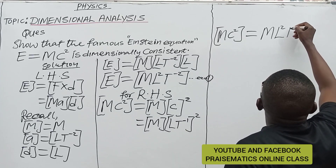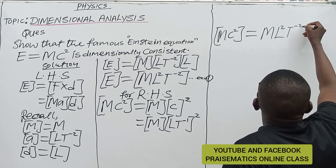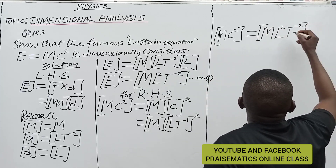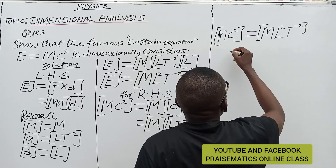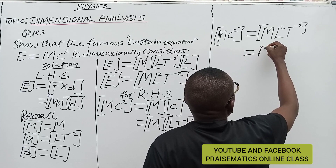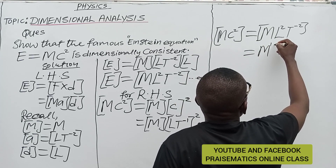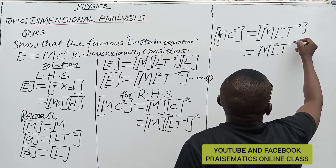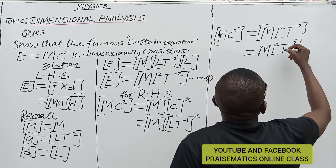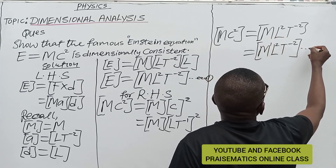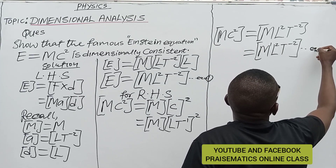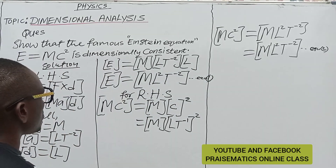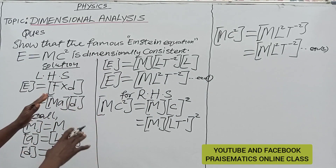When we square (LT⁻¹), the minus 1 gives us T raised to power minus 2. Hence the dimension of mc² is equal to M¹L²T⁻². We call this equation 2.